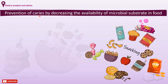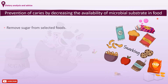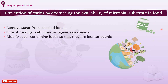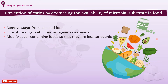Prevention of caries by decreasing the availability of microbial substrate in food. This approach aims to address the modern habit of snacking by removing sugar from selected foods, substituting sugar with non-cariogenic sweeteners, and modifying sugar-containing foods so that they are less cariogenic. Keep in mind that modification of only a restricted number of snack foods would probably be insufficient to have a significant effect on caries reduction.